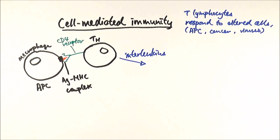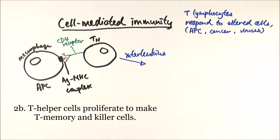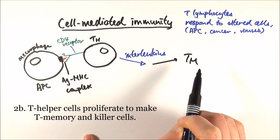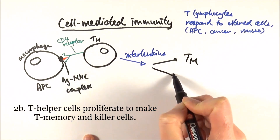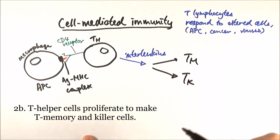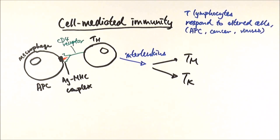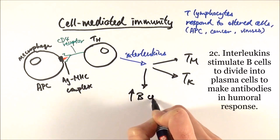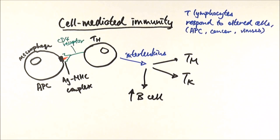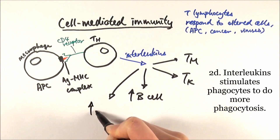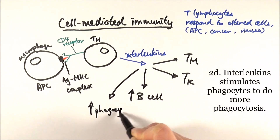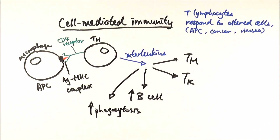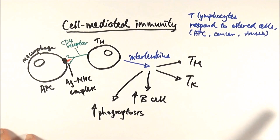The T helper cell then does various things: it clones itself and can differentiate into T memory cells, which memorize what the antigen looks like. It can also make more T killer cells, which go off to hunt down and kill the pathogens. Additionally, it can alert and stimulate B cells to divide and make plasma cells to produce antibodies, or increase phagocytosis by recruiting more macrophages to become antigen-presenting cells.